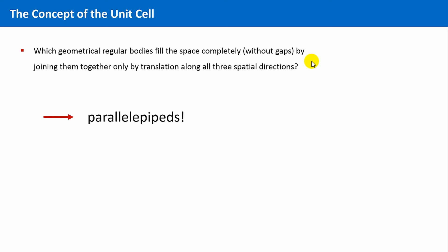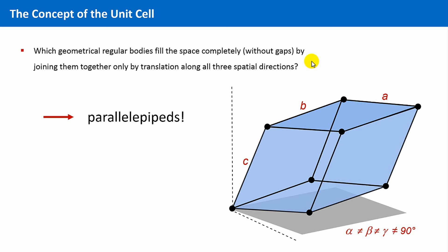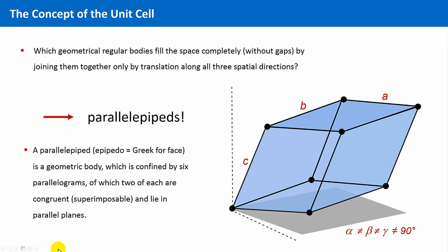And the very general answer to this question is, these are parallelepipeds. What is a parallelepiped? Here you see a parallelepiped in its general form. And the definition is as follows. Epipedion is Greek and means face. And a parallelepiped is a geometrical body, which is confined by six parallelograms, of which two of each are congruent, superimposable, and lie in parallel planes.